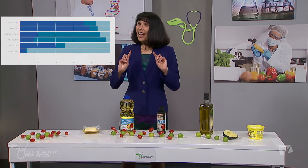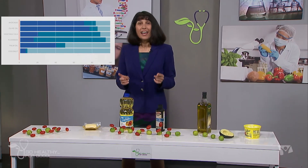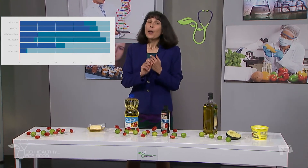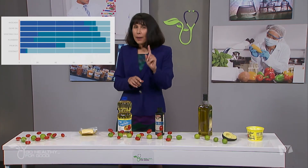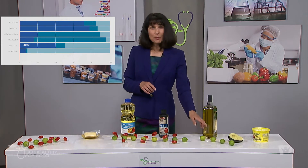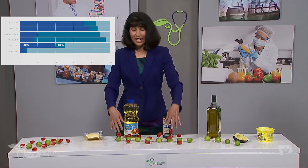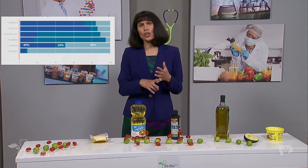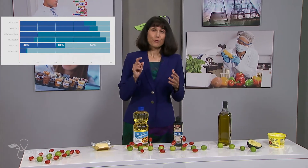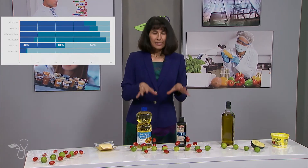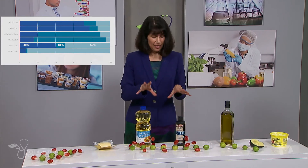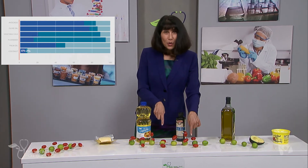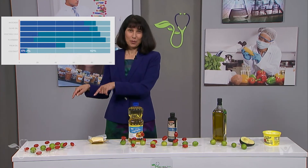Plant fats that are atypical — they stand out from the rest — are high in saturated fats and should be used with caution. Those are palm oil and coconut oil. Palm oil is 40% monounsaturated, 10% polyunsaturated, and 50% saturated. It's used a lot to bake cookies and cakes, and it's often fractionated or hydrogenated, so not good for our health. Coconut oil is only 6% monounsaturated, 2% polyunsaturated, and 92% saturated.